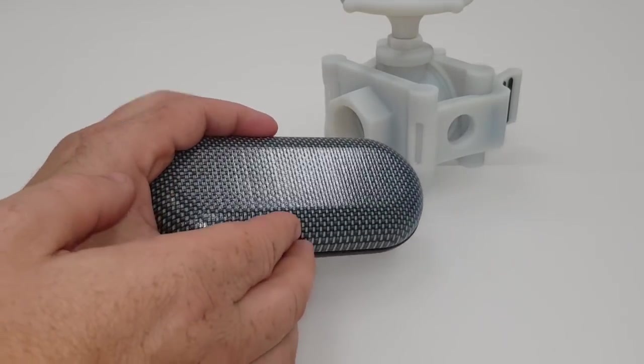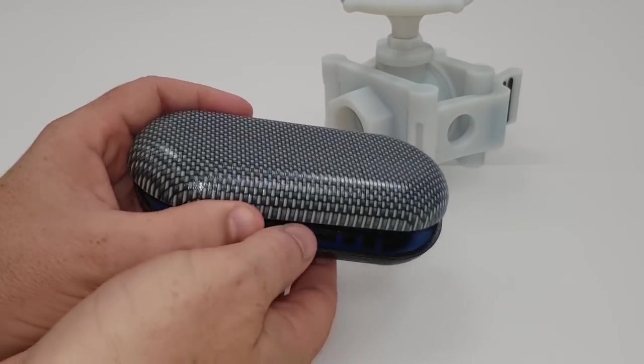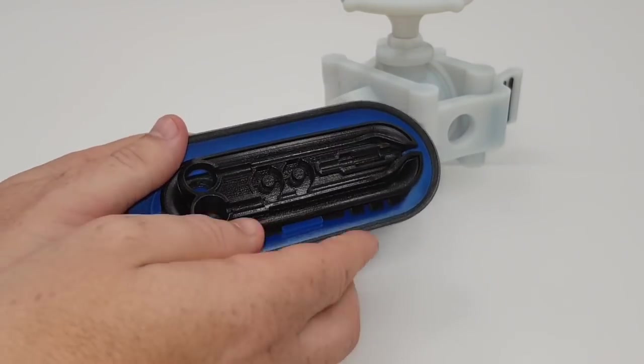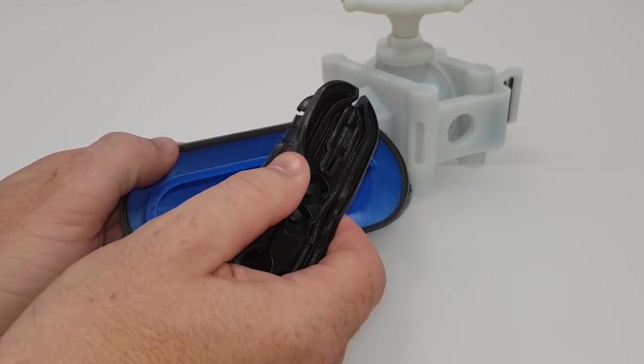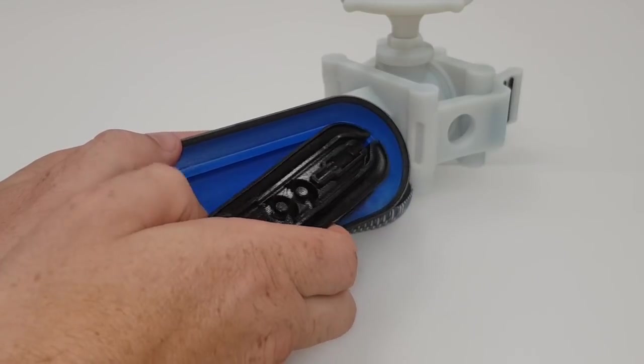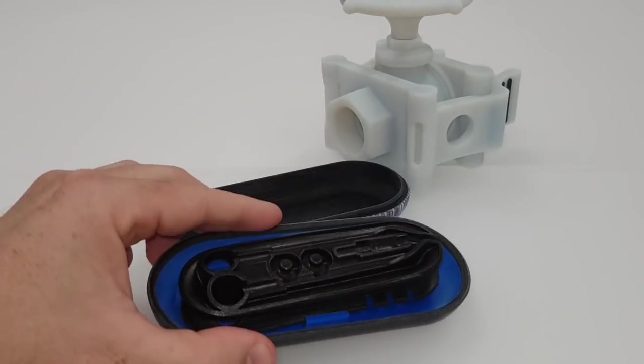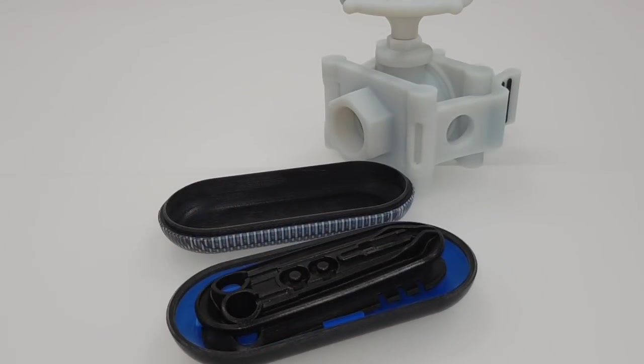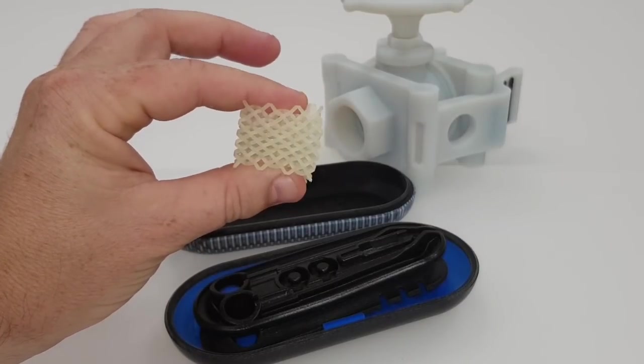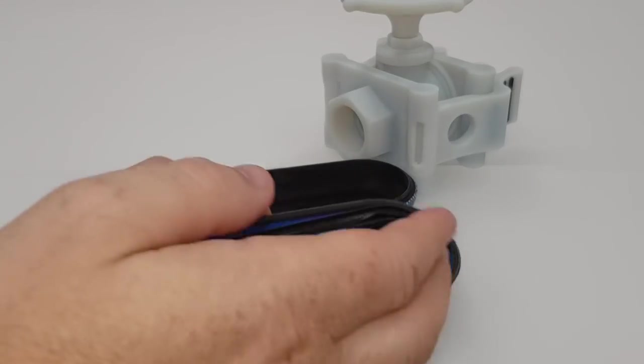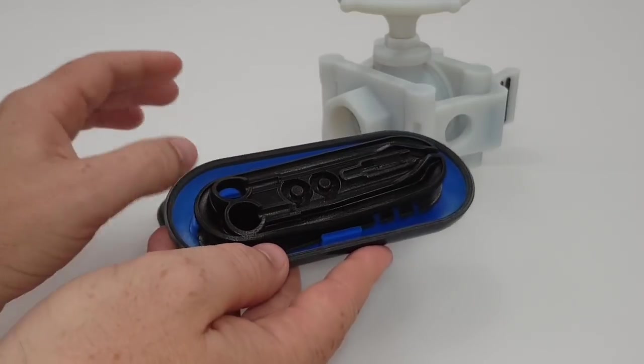Another new material that we have that is also now released on the Stratasys J750 is the Agilus material. Here we have an earphone case that we've printed and you can see this insert inside is created in the Agilus 30 black material. The Agilus 30 is a material family that includes the black color and also a very nice translucent color, an example of some sponge here. These materials feature enhanced elongation at break compared to previous rubber-like materials.